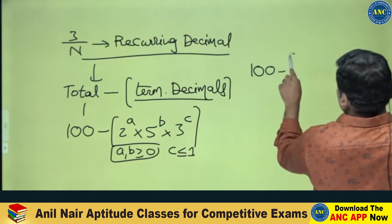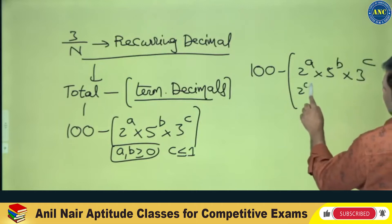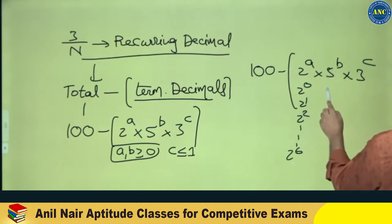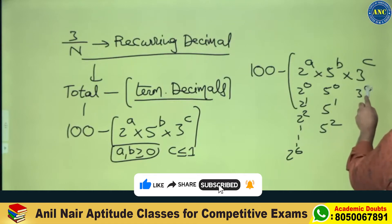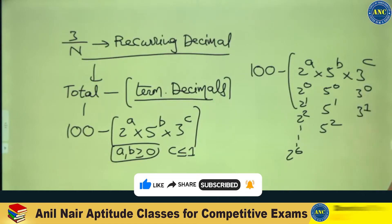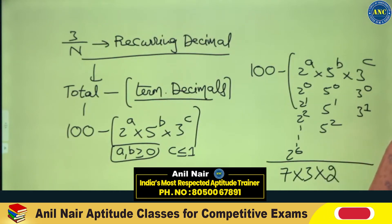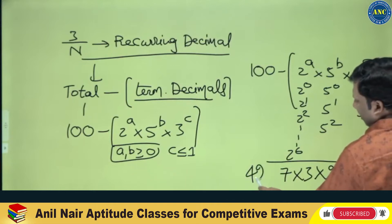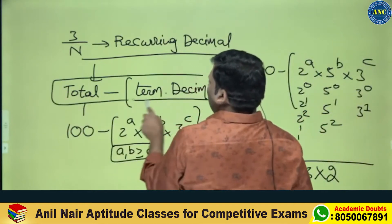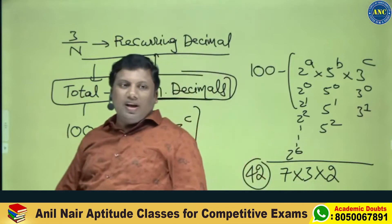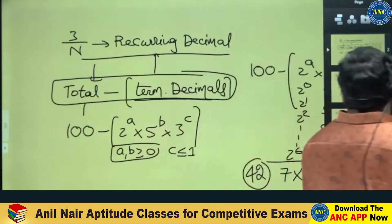So the answer is 100 minus the terminating cases. 2^a can take values 2^0 through 2^6 — that is 7 combinations. 5^b can take 5^0 through 5^2 — 3 combinations. 3^c can take 3^0 or 3^1 — 2 combinations. So 7 × 3 × 2 = 42 terminating cases. Total minus terminating: 100 minus 42 = 58 recurring decimal values.